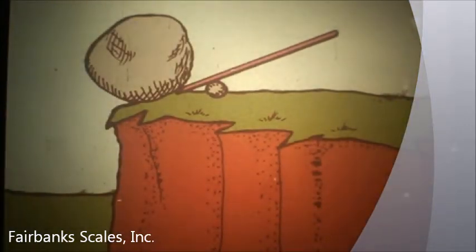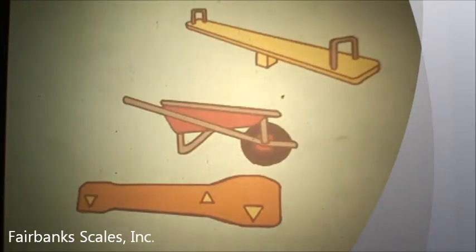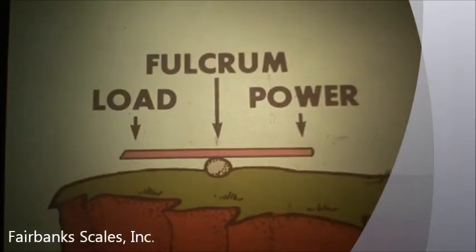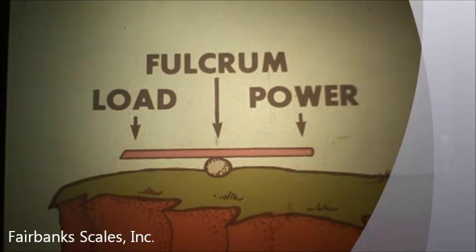The crowbar is only one of many kinds of levers. The seesaw, the wheelbarrow, the beam in a motor truck scale — all are levers. All levers have three points in common: the load point, the fulcrum point, and the power point.